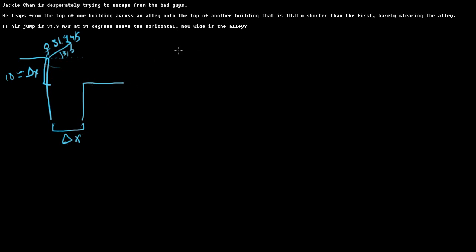Let's start writing down some knowns. We know that vi is 31.9 meters per second. Notice this is not vi x, this is not vi y. This is vi. This is the velocity at 31 degrees.